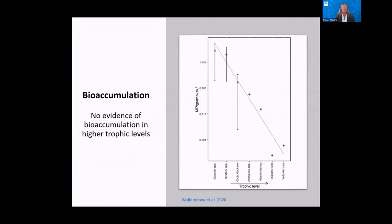It has been hypothesized that microplastics may bioaccumulate up the food web like some other contaminants. While trophic transfer has been reported in studies, evidence of bioaccumulation in marine food webs has not been found. A study by Walkinshaw and others demonstrated that microplastic particles per gram of wet weight decreased for organisms at higher trophic levels, moving from bivalves up to yellowfin tuna. Rather than bioaccumulation, this actually demonstrates a dilution. The authors concluded that seafood at lower trophic levels may pose a greater risk compared to organisms at higher trophic levels.